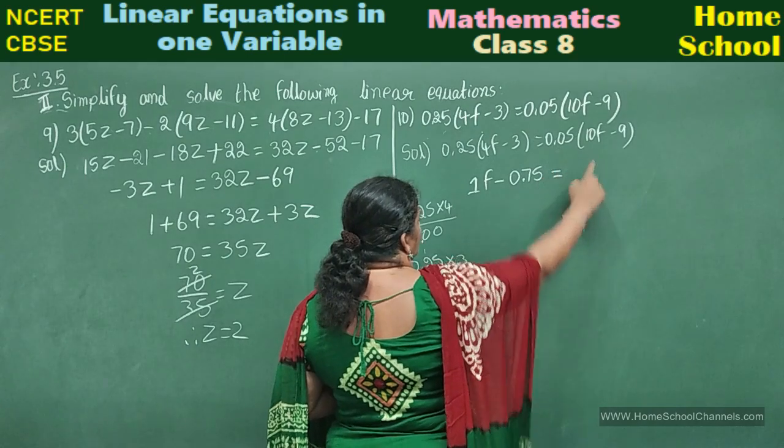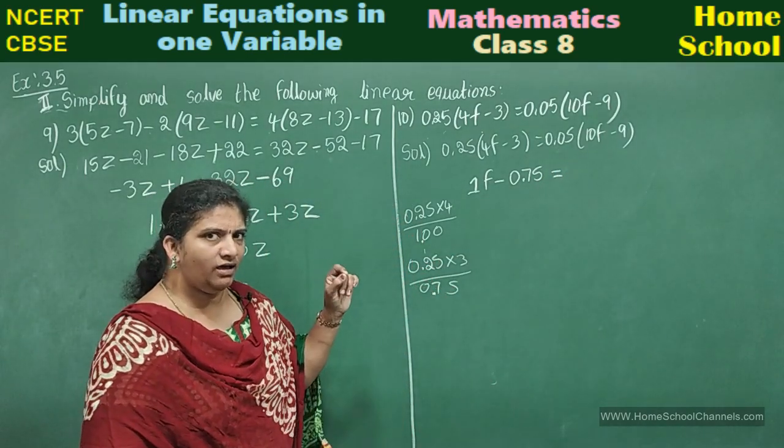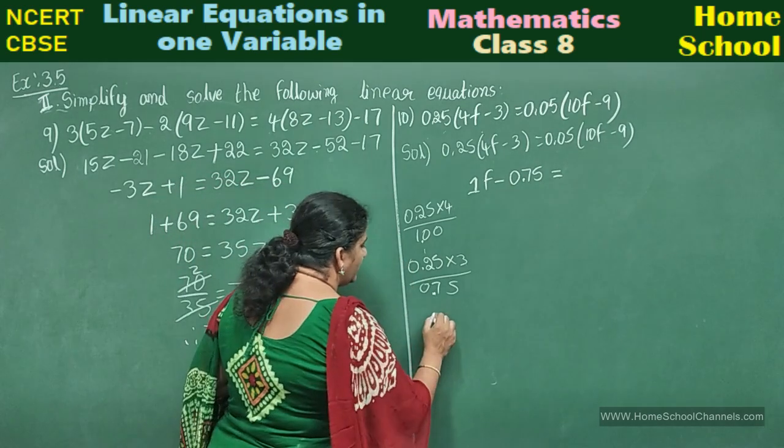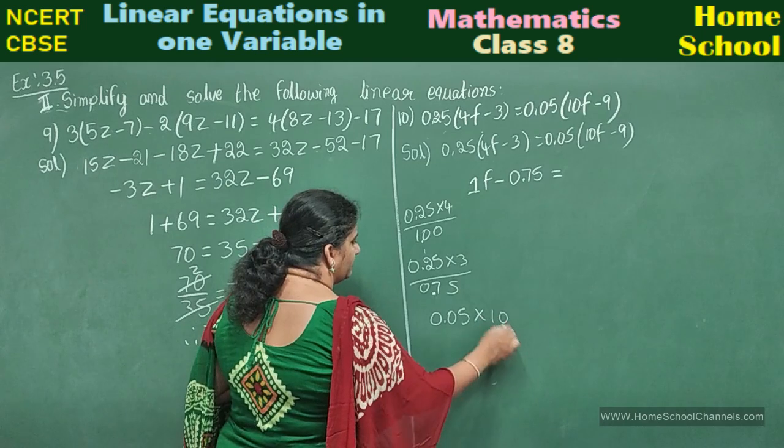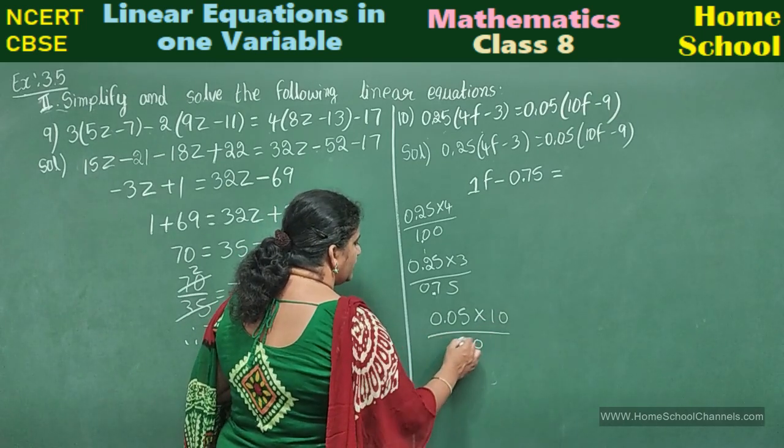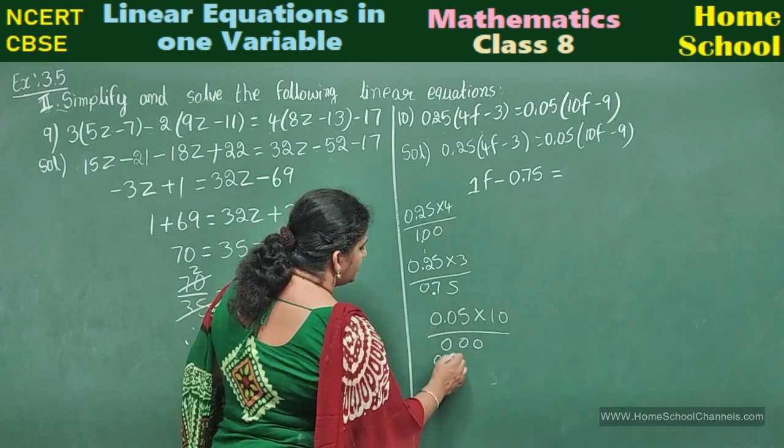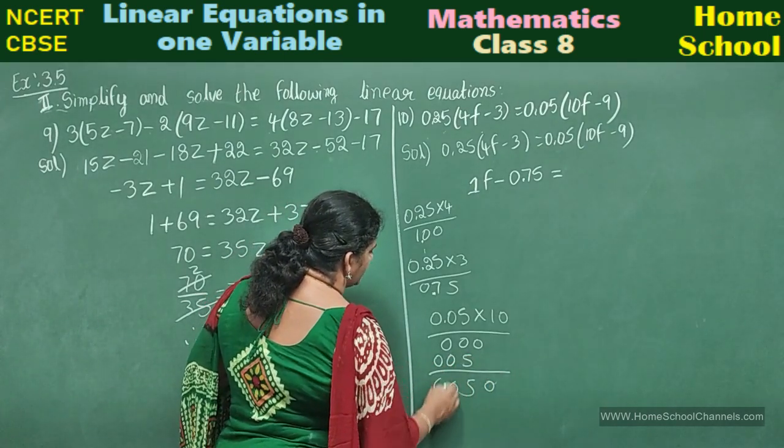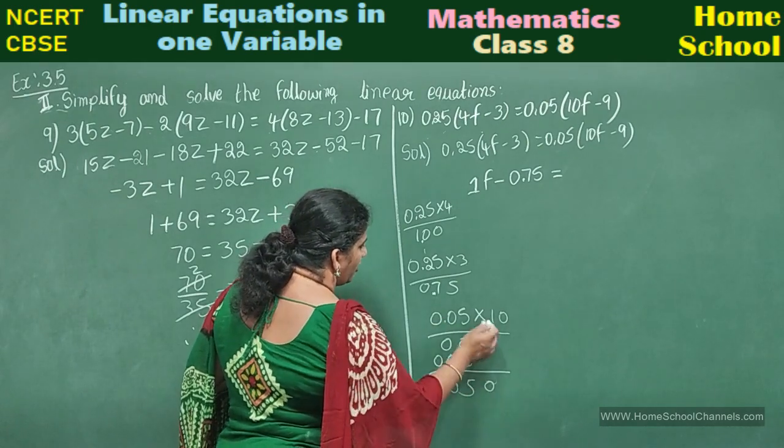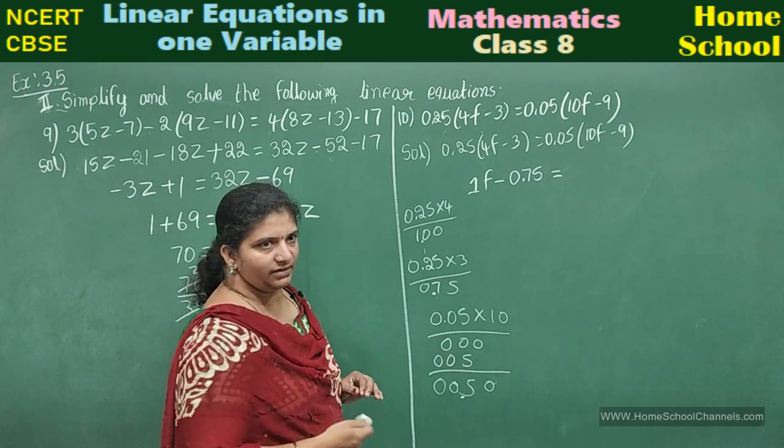Now here, 0.05 into 10f. What is the variable here? f. Now find out 0.05 into 10. If you multiply 0.05 with 10, you can say 0.500 you got. Decimal point after 2 digits from the right side, so 0.50 you can write.